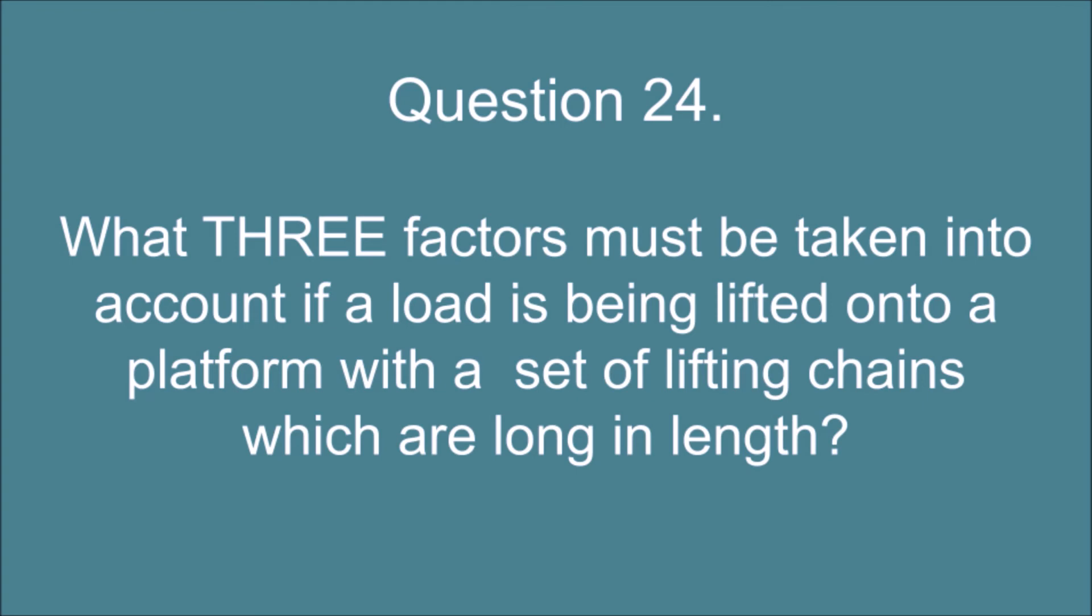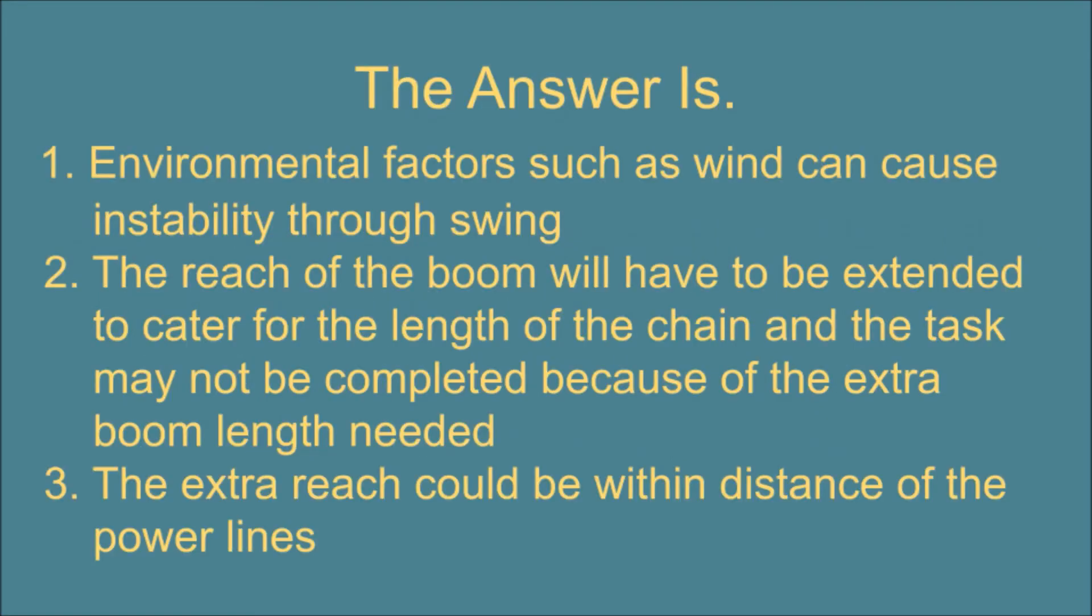Question 24. What three factors must be taken into account if a load is being lifted onto a platform with a set of lifting chains which are long in length? The answer is: 1. Environmental factors such as wind can cause instability through swing. 2. The reach of the boom will have to be extended to cater for the length of the chain and the task may not be completed because of the extra boom length needed. 3. The extra reach could be within distance of the power lines.